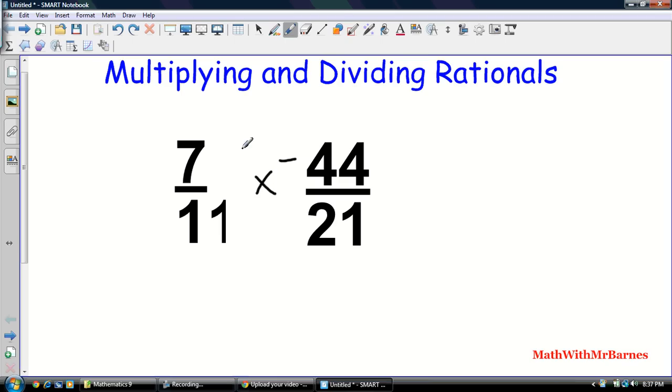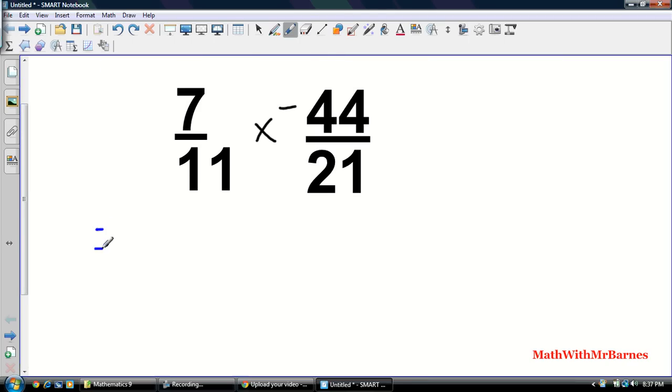I know that 7 can go into 21: 21 is 7 times 3. I know that 11 can go into 44: 44 is 4 times 11. So let me just break this guy up a bit first. So 7 and 11, there's not much I can do with that. Times—and don't forget to put my negative—44 is 4 times... instead of having a multiplication sign, I'm going to put a dot there. That's usually what I do just when I'm trying to break a number up.